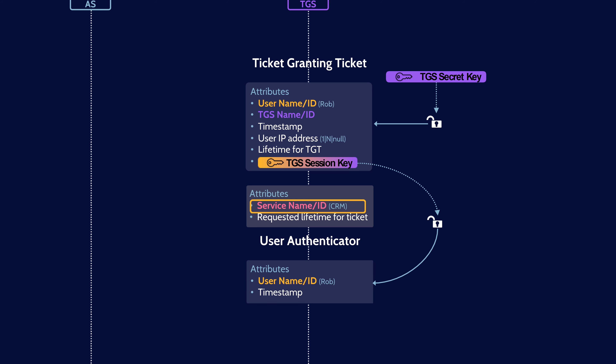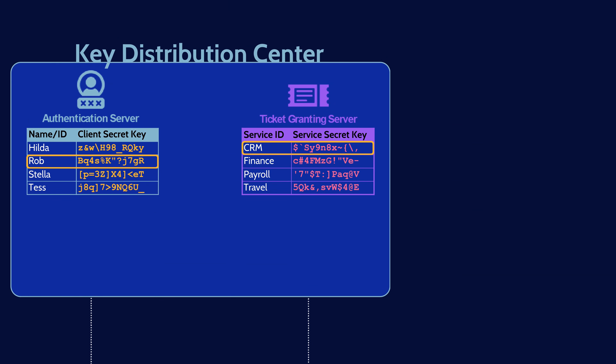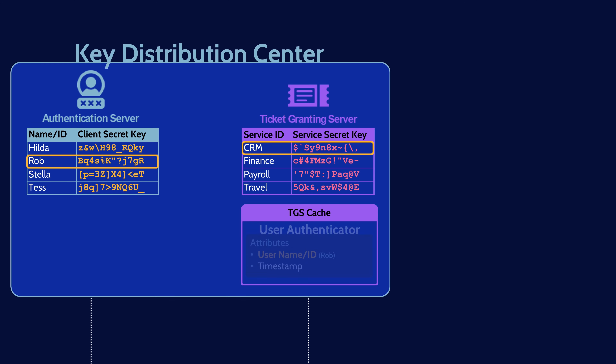Now that both the TGT and the authenticator message have been decrypted, the TGS starts to validate the data contained within. The TGS first makes sure that the user ID in the TGT and the authenticator match, compares the timestamps (typically Kerberos is configured to tolerate up to a 2-minute difference), and compares the IP address in the TGT to the IP address of the user it received the messages from (this can be null). It also checks that the ticket granting ticket has not expired. If everything is in order, the TGS checks its cache of recently received authenticators from users to ensure the authenticator it just received is not already there — this check provides replay protection. If not already in the cache, the TGS adds it.